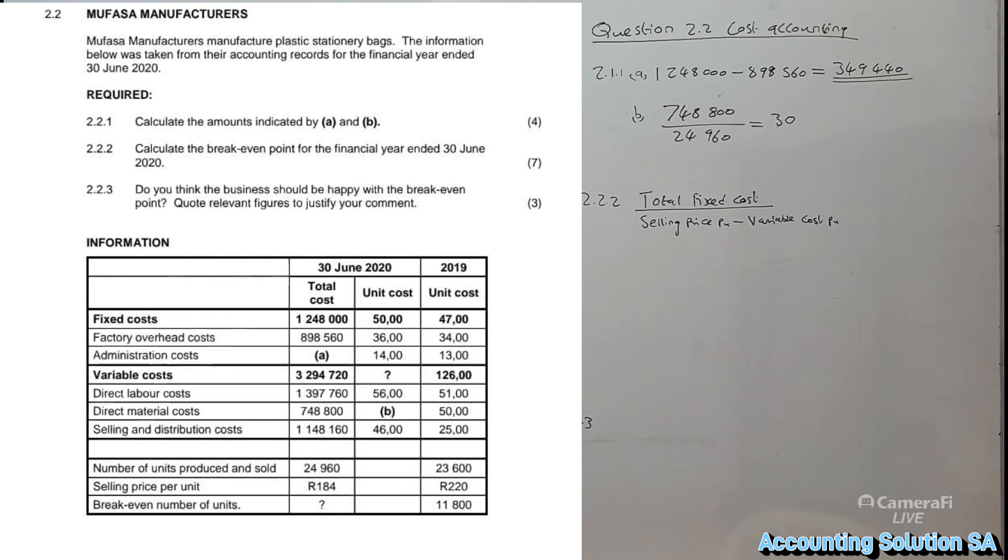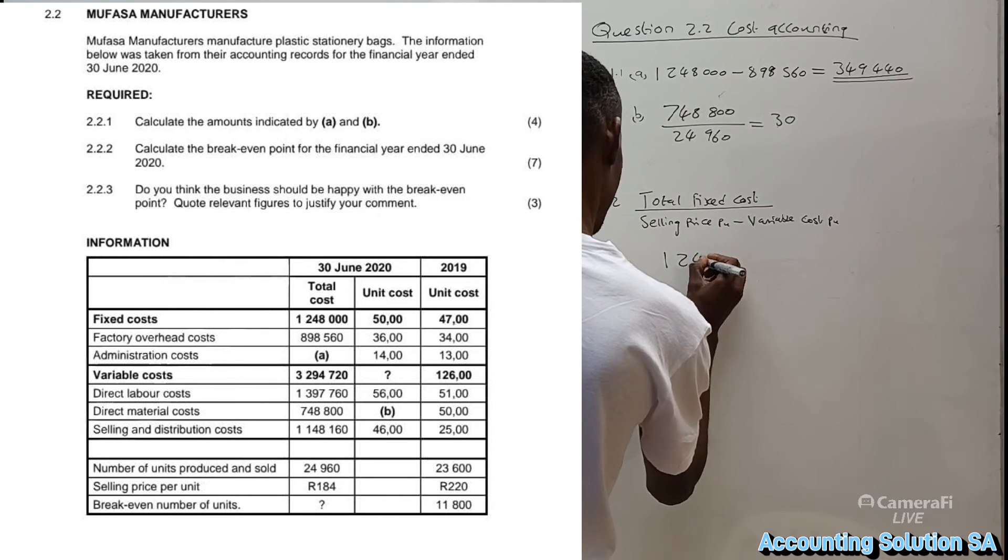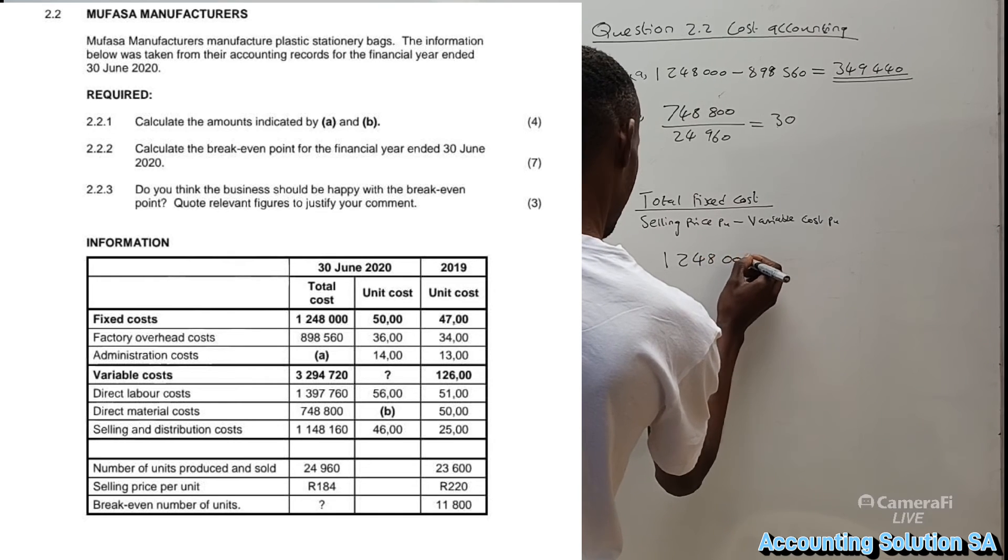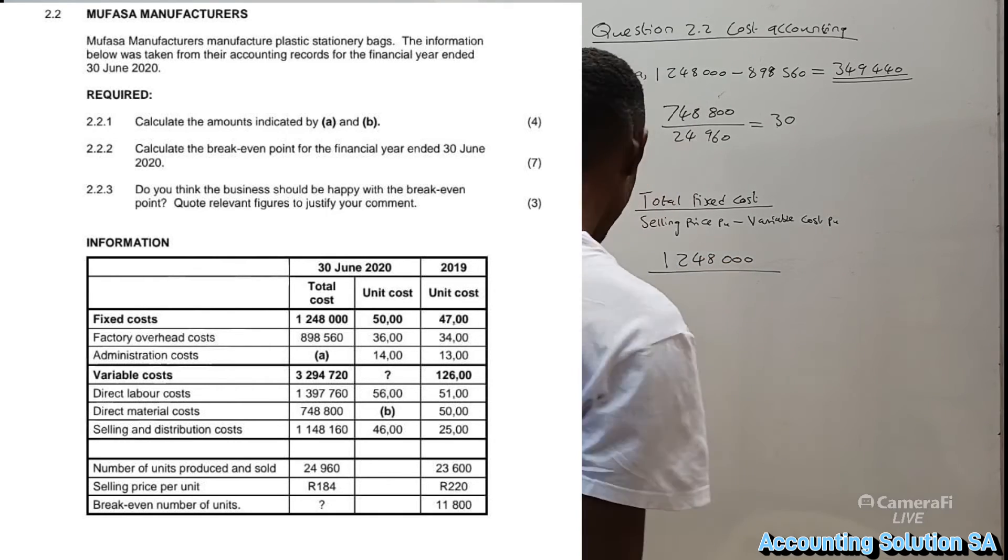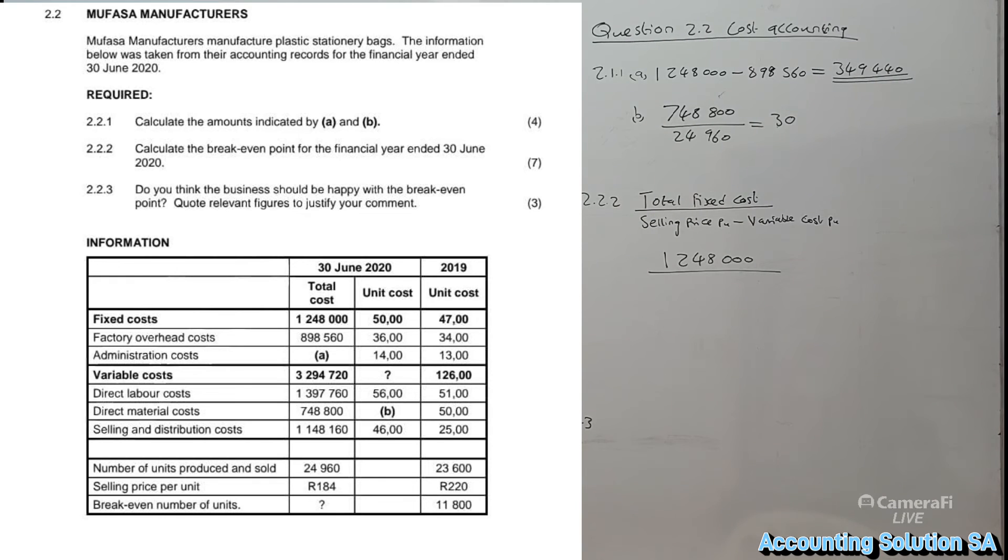Let's identify our total fixed cost. We know it is 1,248,000. Our selling price, if you check the table, is 180 rand.